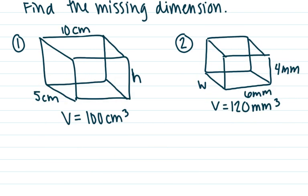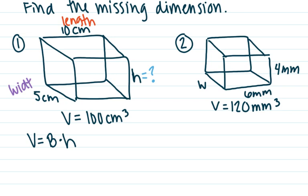Another thing they may ask you to do is find a missing dimension. This is when they give you the volume and you work backwards to find what's missing. Write your volume formula and plug in the numbers. Here, I'm missing my height H. I do have my length and my width — that's 5 centimeters. I also have my volume, which is 100. I'll plug all these numbers in.